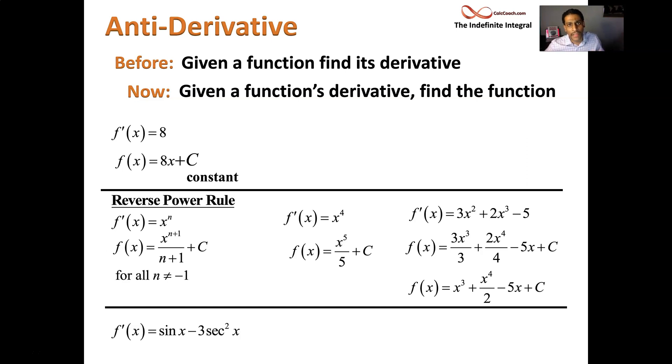What about if your derivative is sine x minus 3 secant squared x? Let's get some trig in here. What function has sine x as its derivative? Not cosine. You'd have to do negative cosine x. What function would have secant squared as its derivative? I gave it away. It's tangent. So you carry down the minus 3. All right. Great.